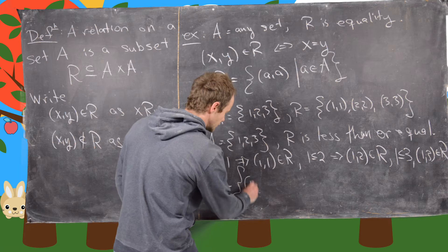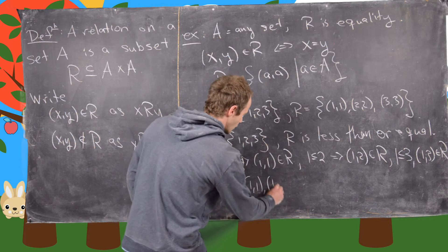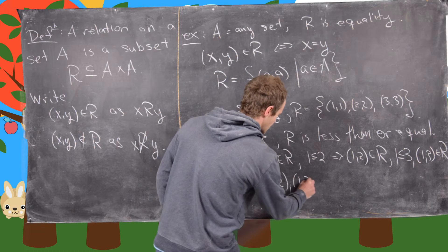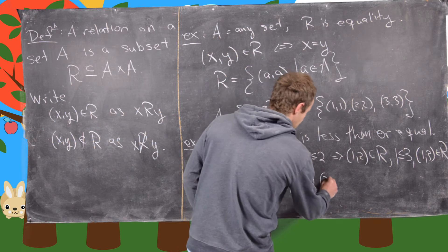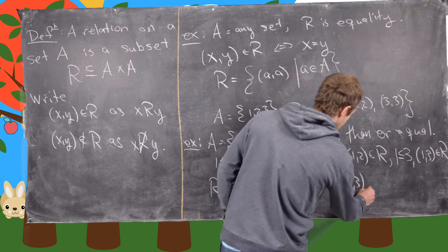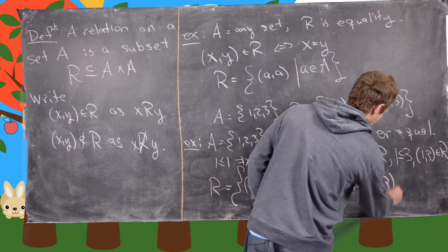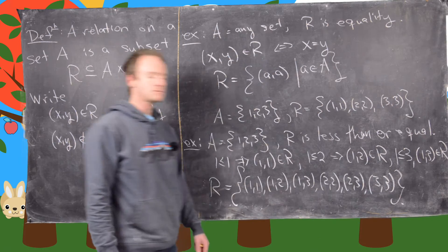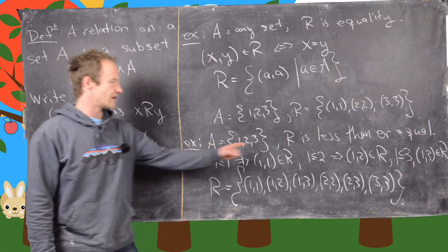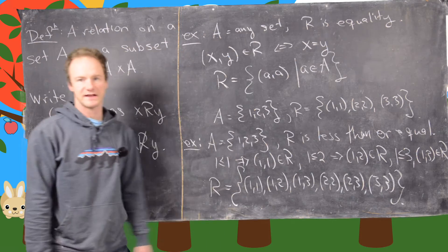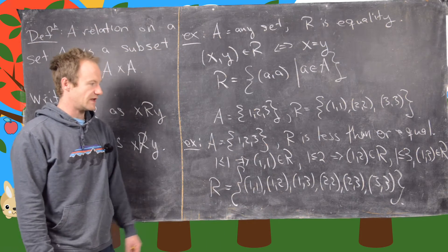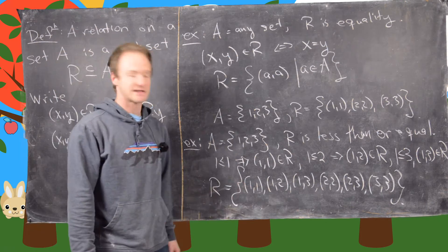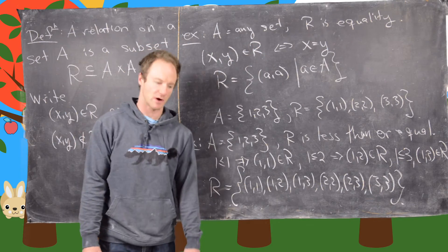But it's pretty easy to jump just to the set version of R. So notice R is equal to 1 comma 1, 1 comma 2, 1 comma 3, and then 2 comma 2, 2 comma 3, and then finally 3 comma 3. So we've taken like a very simple verbal way of writing down a relation, and we've written it in this technical setup that involves a subset of the cross product.